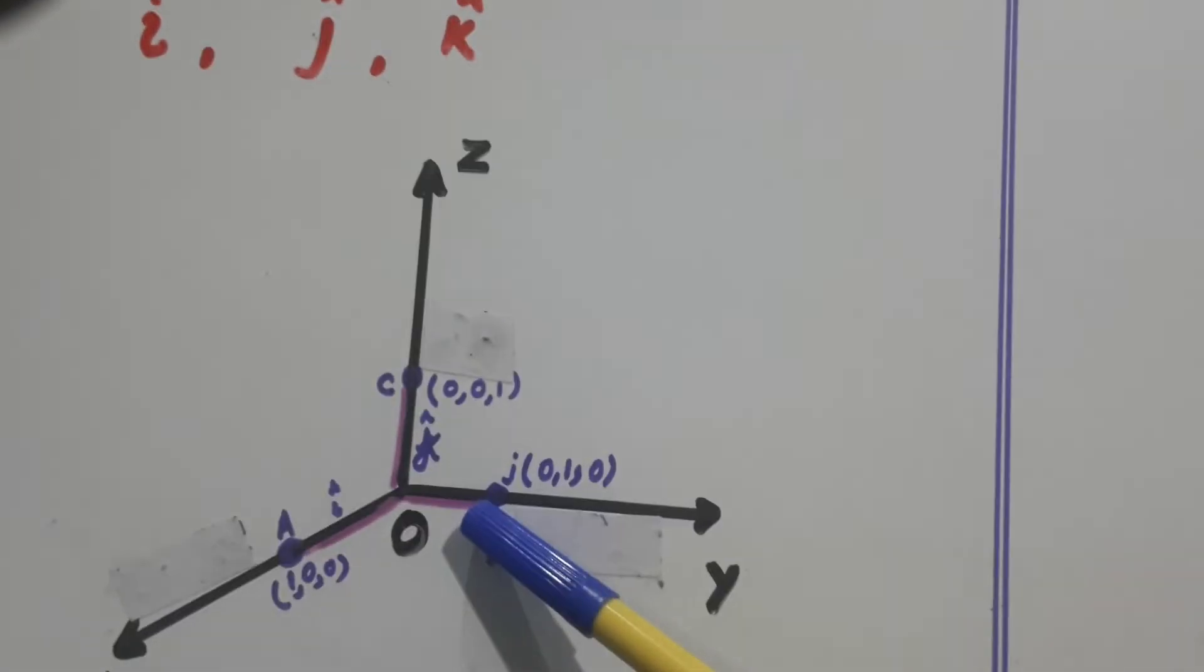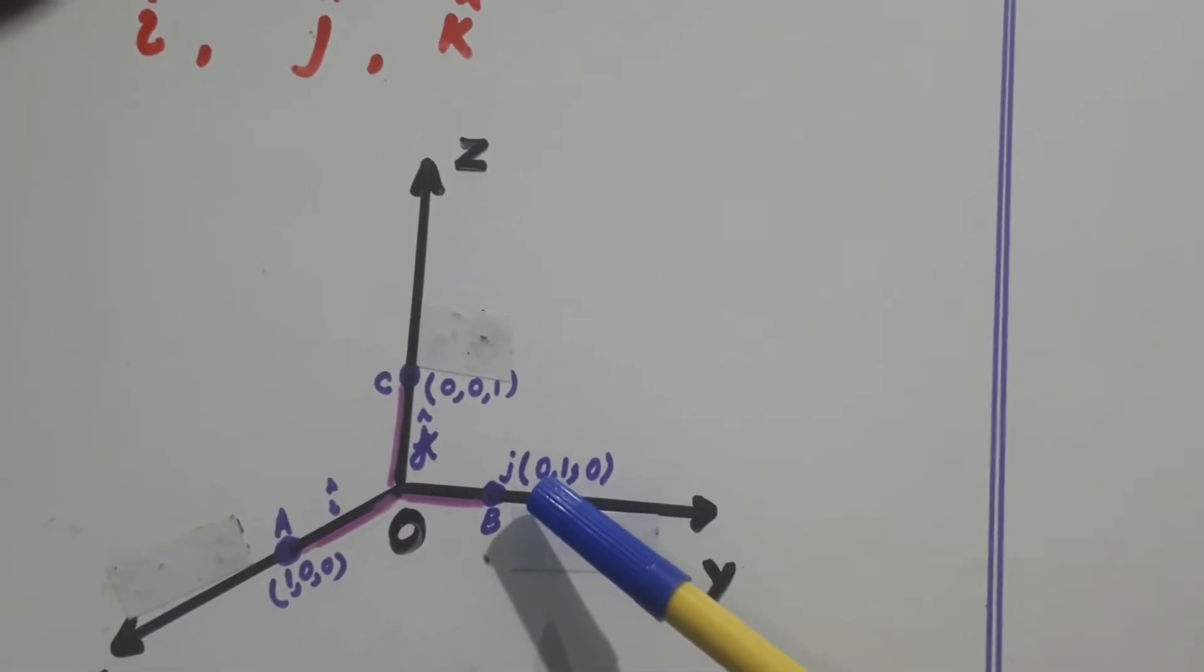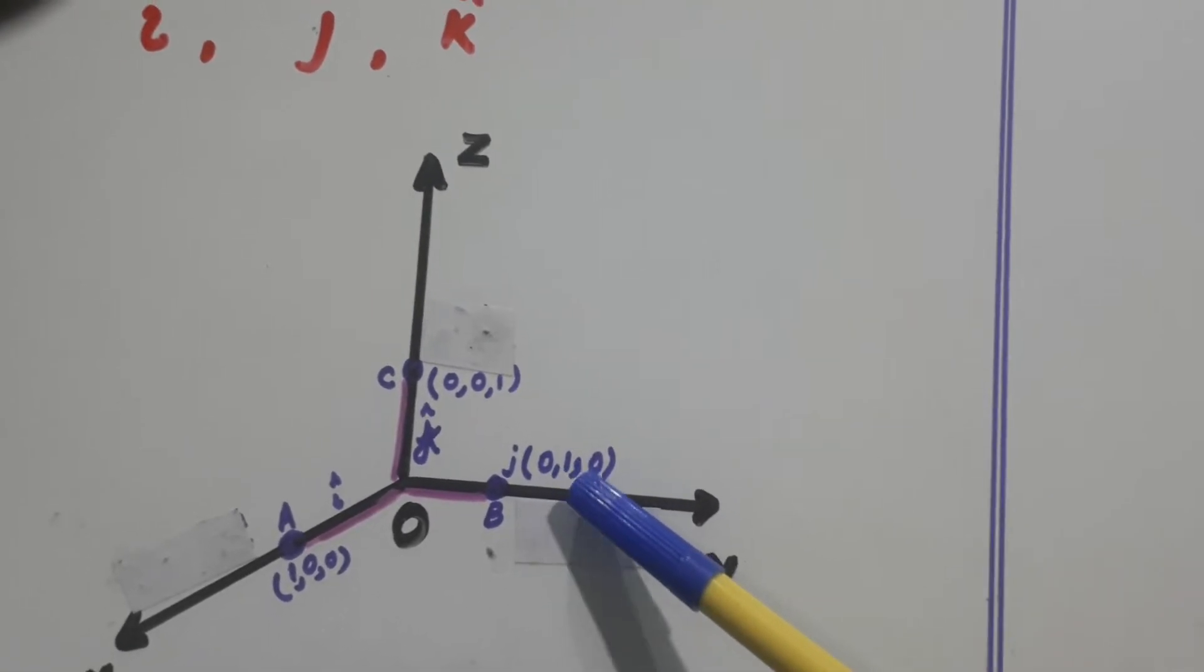Now this is one unit on y-axis. It is denoted by j cap. Its coordinates are 0, 1, 0.